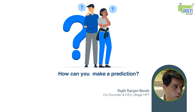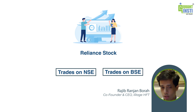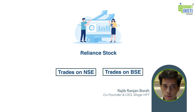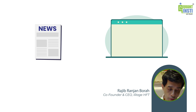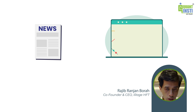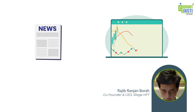Take the example of Reliance, trading on the Indian exchanges — it trades on NSE and BSE. Reliance also has futures listed on NSE and BSE, options listed on both exchanges, and multiple futures with different expirations. That means there are 100-plus instruments linked to Reliance. Every time there is a news or event in Reliance, the price moves in one of those instruments and then follows in the rest.